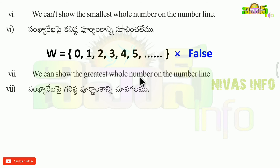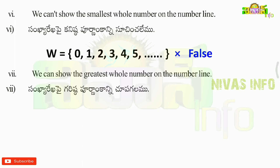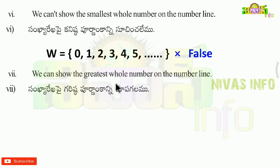We can show the greatest whole number on the number line. Can we show the greatest whole number? On the number line, numbers go on infinitely, so we cannot show the greatest whole number. The statement is false.